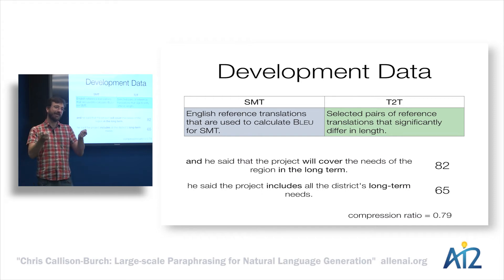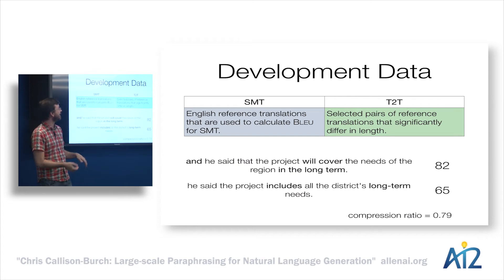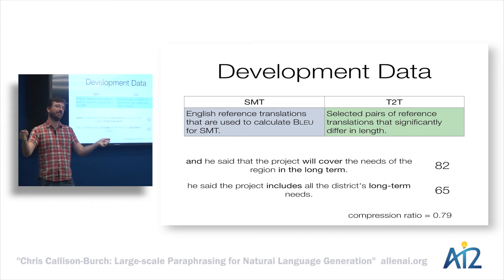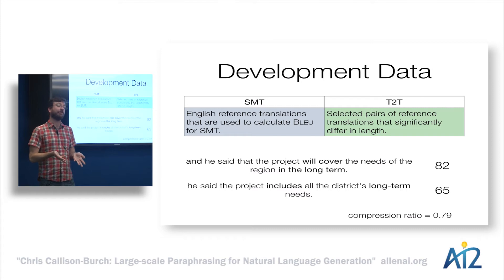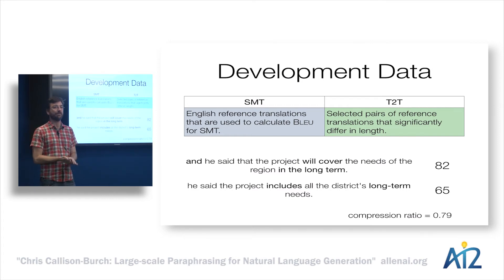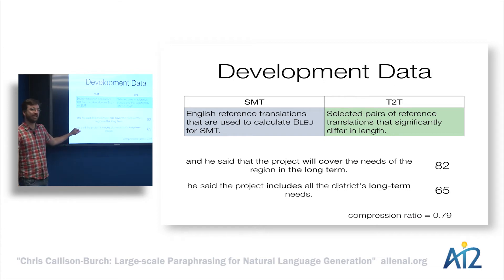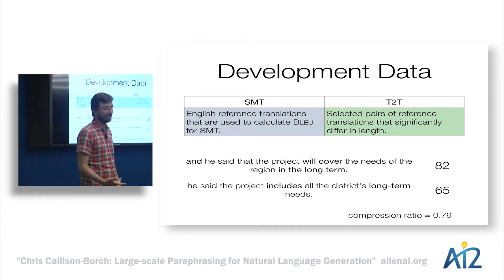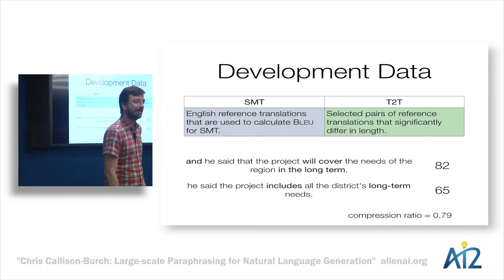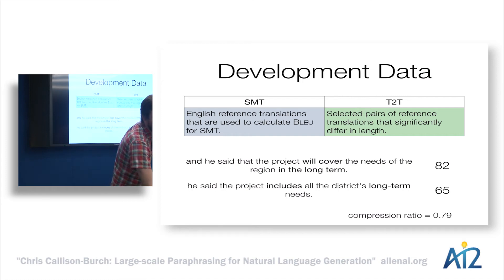For compression, we can actually steal this data to create our compression development set. We pick out pairs of sentences from these multiple translations where one is long and one is short, and use that as our example development set to show the model what types of transformations we'd like it to make. For instance, if we're targeting a compression ratio of about 0.8, that's a useful pair.